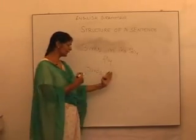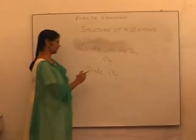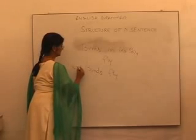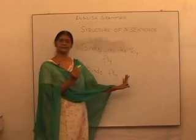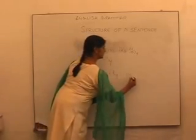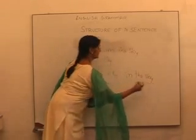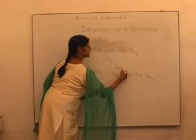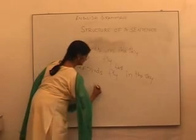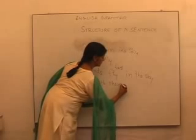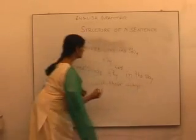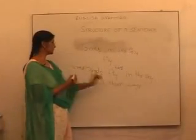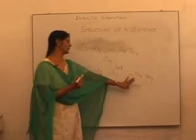Now let's see how we can make the sentence bigger or longer and add more information about birds. What birds? I want to tell you that they are red birds. The red birds — and where are they flying? 'Red birds fly in the sky.' And how do they fly? Fast or slow? They fly fast. And with what do they fly? With their wings. So here we have a long sentence: 'The red birds fly fast in the sky with their wings.' I have given you a lot of information about the birds — that they are red, they fly fast, they fly in the sky, and with their wings.